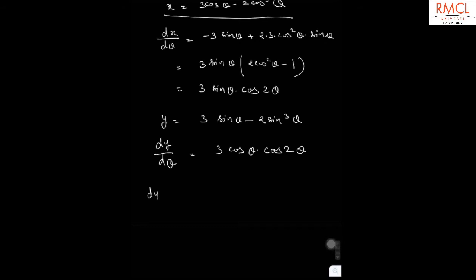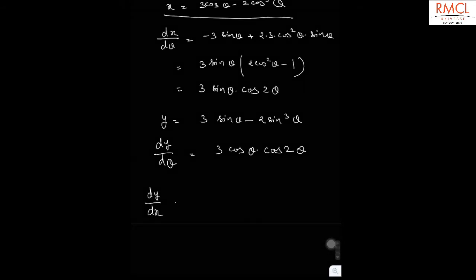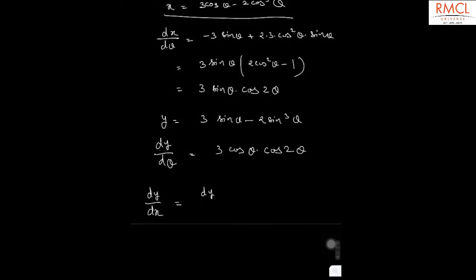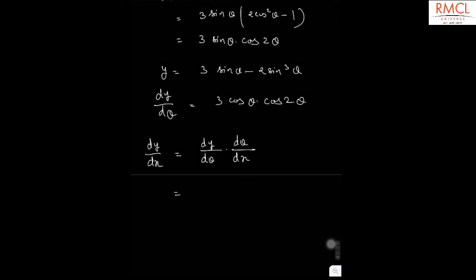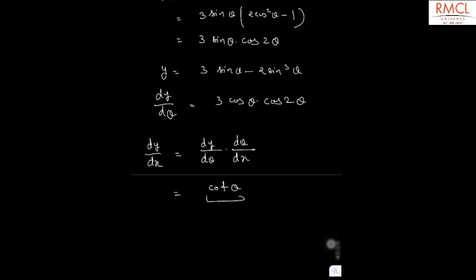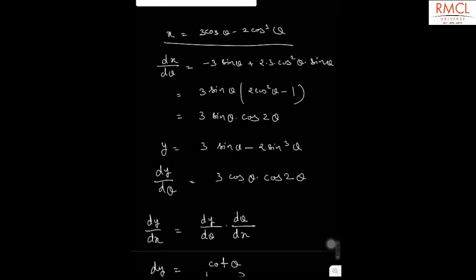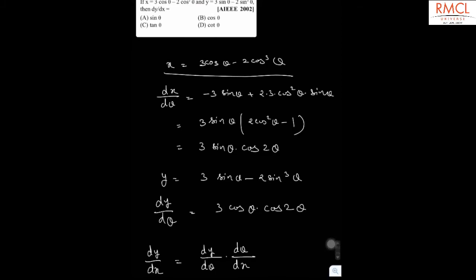Now we have to find the value of dy by dx. So dy by dx can be written as dy by d theta multiplied by d theta by dx. So it is equal to cot theta. Therefore dy by dx is equal to cot theta, and the correct answer is option D.